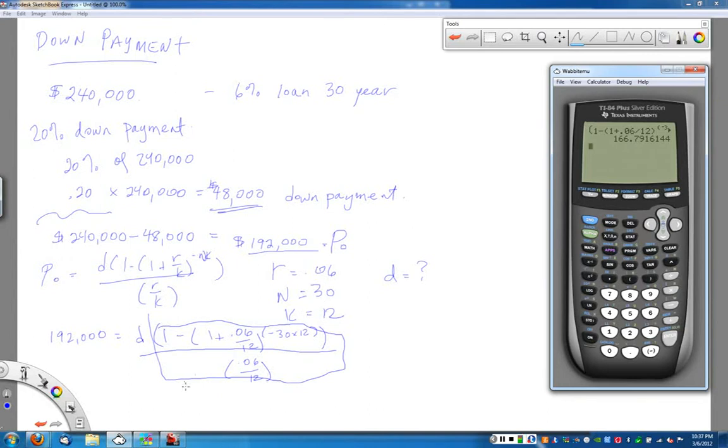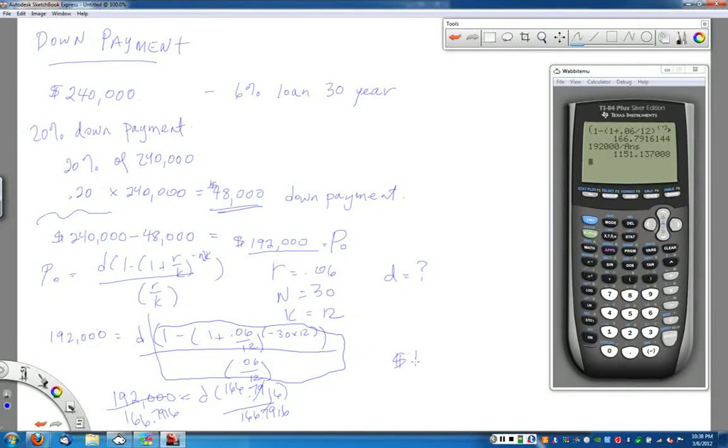This right side here is this 166 number. So I have 192,000 is equal to D times 166.7916 blah blah, divide by that 166 number on both sides. 166.7916, and that gets the D by itself. And on the other side of the equation, when I do 192,000 divided by that last answer on my calculator screen, I get a monthly payment of $1,151.14.